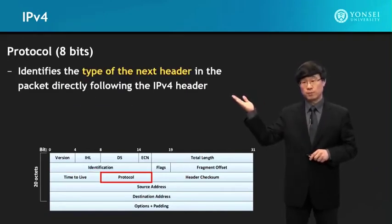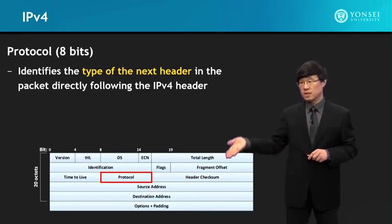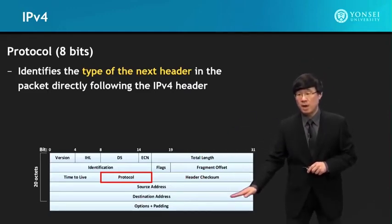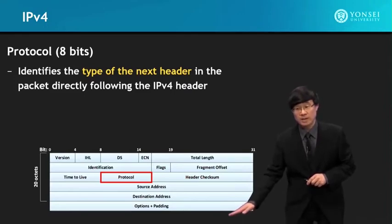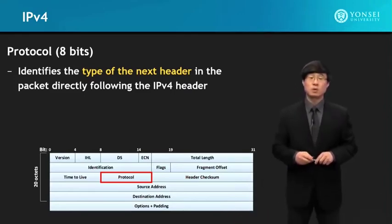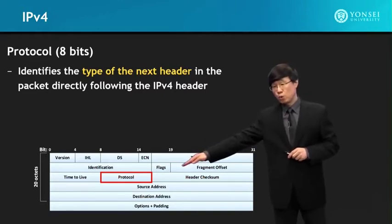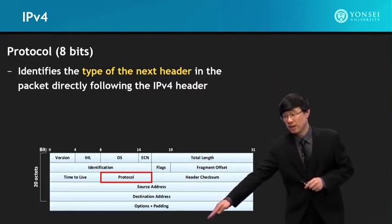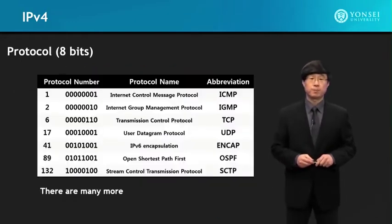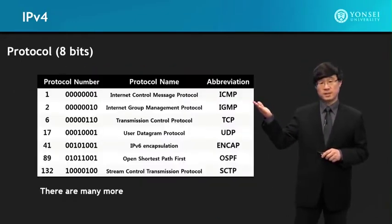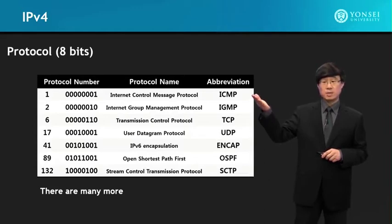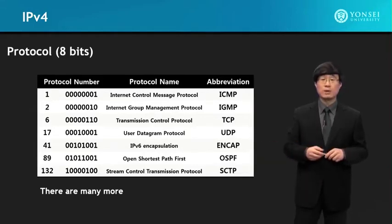The protocol field identifies the type of the next header in the packet directly following the IPv4 header. The protocol field indicates what next header follows after the IPv4 header. Protocol options include TCP and UDP — the most popular ones — as well as ICMP (Internet Control Message Protocol) and OSPF, which is used for routing path setup.